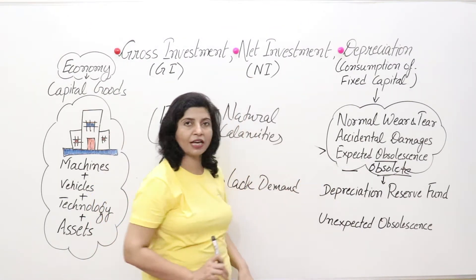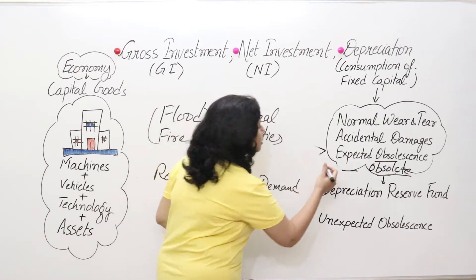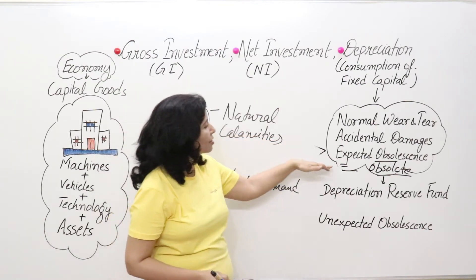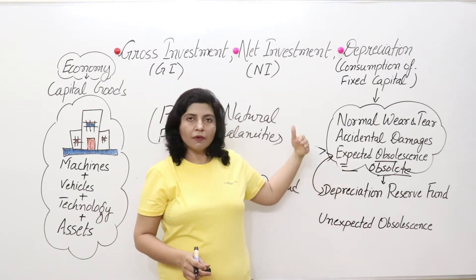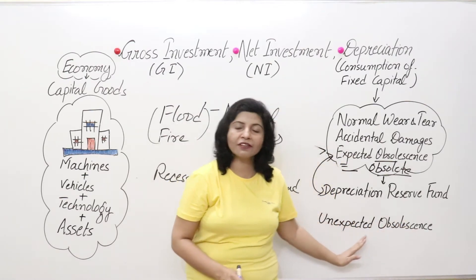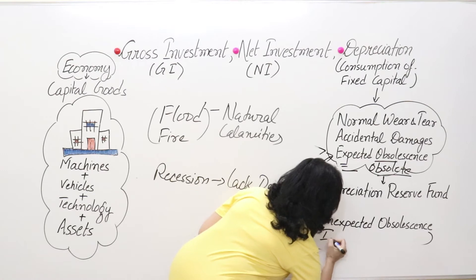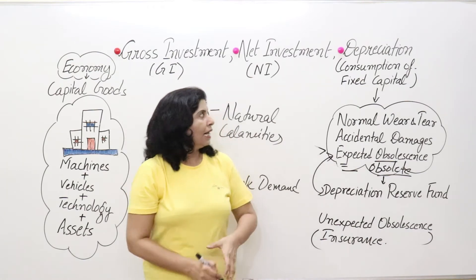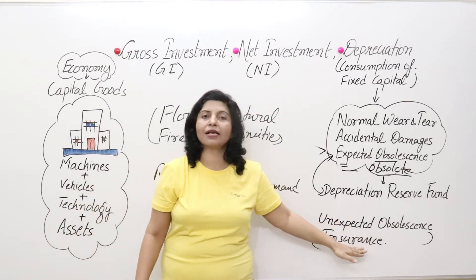How to manage them: expected obsolescence can be managed through the depreciation reserve fund, because businessmen know it will happen and can put a fixed installment towards this fund. But unexpected obsolescence can't be predicted, so it is managed through insurance — insurance cover of your capital. Remember: depreciation is known as consumption of fixed capital, and unexpected obsolescence is known as capital loss.